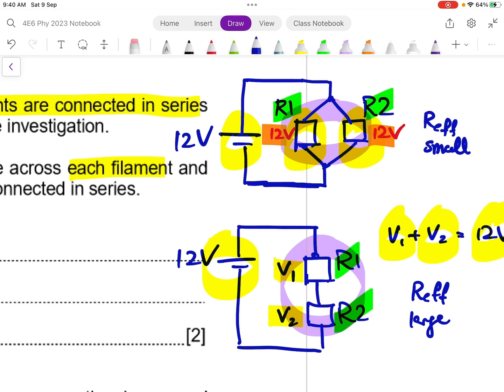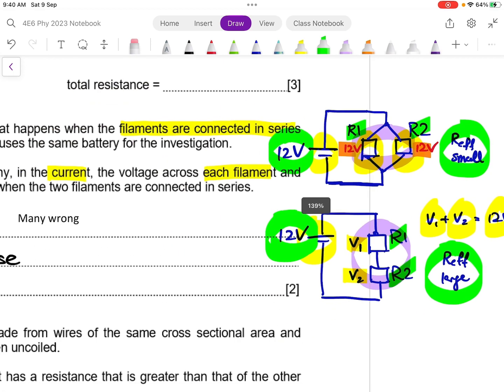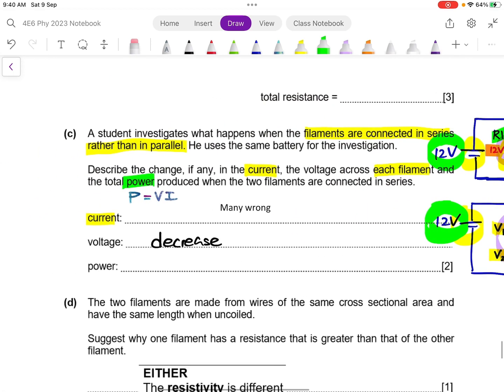And if your power supply is still the same 12 volt with a smaller R effective, you are going to get a big current. But when you have the same 12 volt, but now the R effective is larger, you are going to get a smaller current being drawn. So now I know that the current will drop as well as the voltage. So if now I apply the P equals to VI formula, I would know that the power would have dropped as well. So that's how you answer part C.